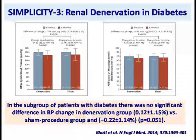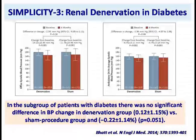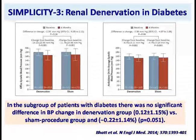The data from Symplicity 3, the renal denervation trial, failed to show any benefit. At six months, in the denervation arm there was a decline from baseline of 14 mmHg, and in the sham control arm — where they just inserted and removed the catheter without denervation — there was a decline of 11.7 mmHg. The difference was not significant. Both groups had significant declines, but the intergroup comparison was not significant. Ambulatory blood pressure recording data also showed no significant benefit. In the subgroup of patients with diabetes, there was no significant difference in blood pressure change in the denervation group versus the sham group.